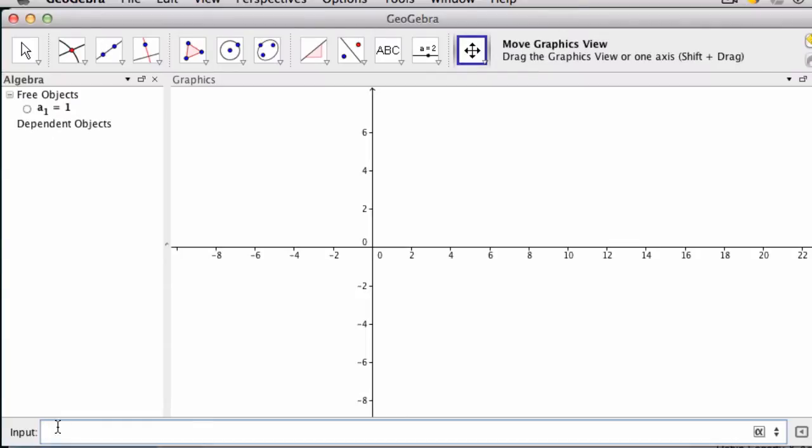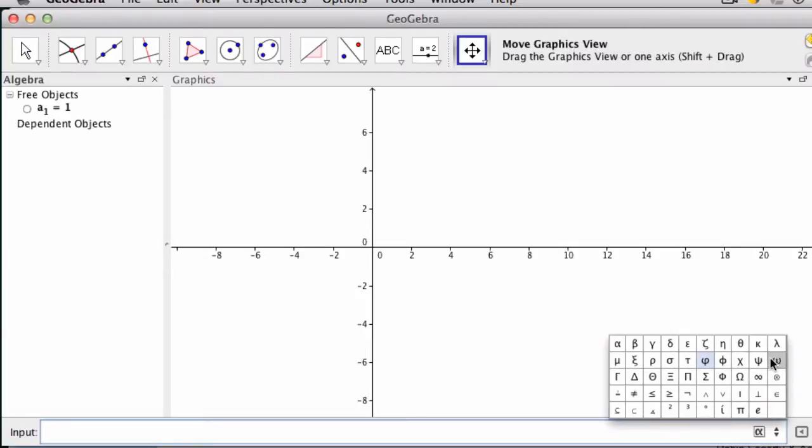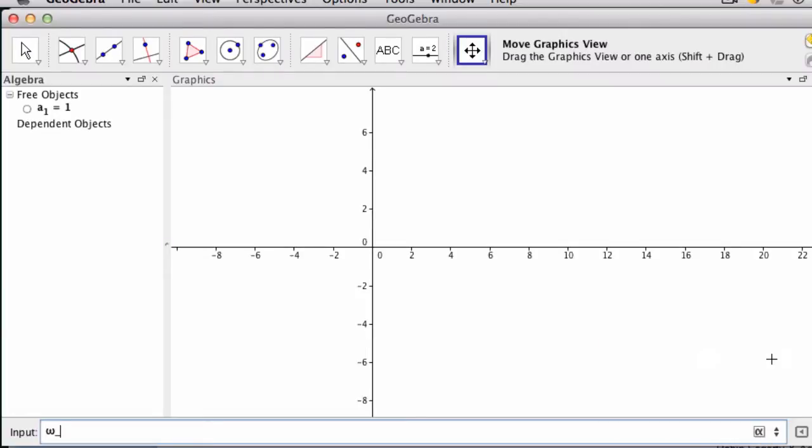Next, I'm going to set up omega sub one. So I click this button over here, this gives me my Greek symbols, pick omega sub one. This is my angular frequency, this affects the pitch of the tone.